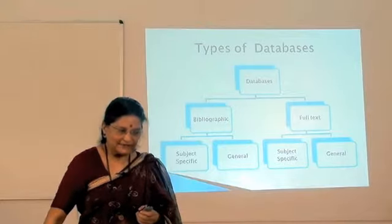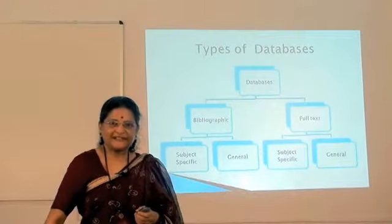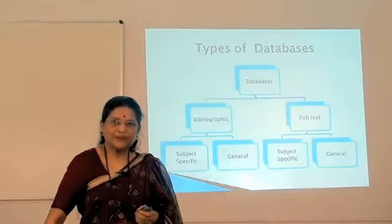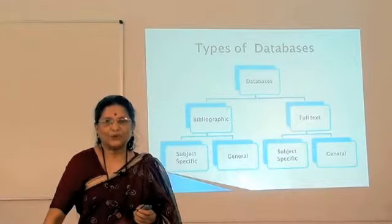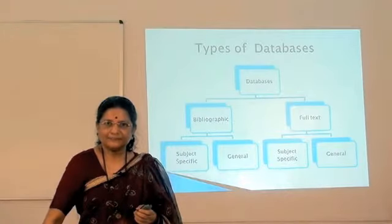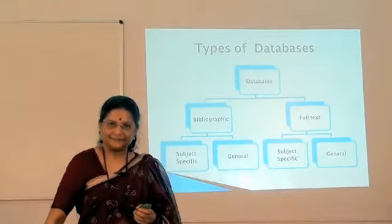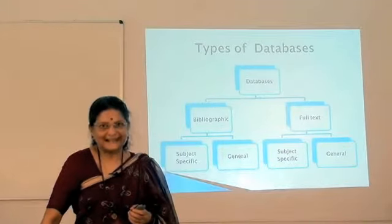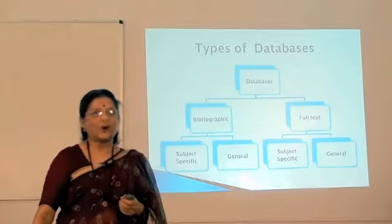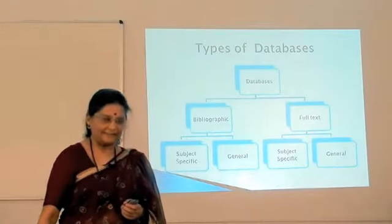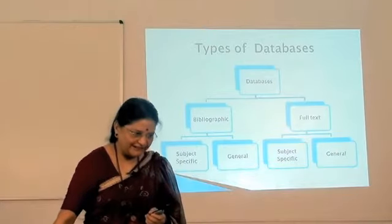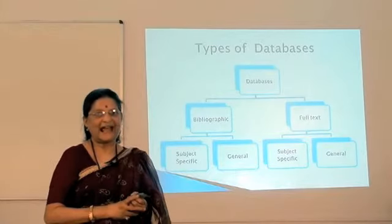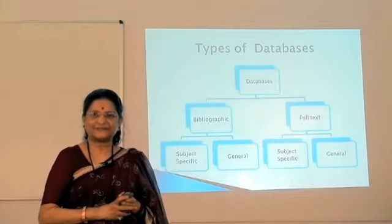There are two types of databases: one is bibliographic database and another is full-text database. Bibliographic databases normally give you the citation and abstract. In contrast, the full-text database gives you the complete text — maybe a thesis or journal articles. Within a bibliographic database, it can be divided into subject-specific databases and general databases.